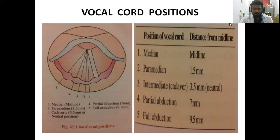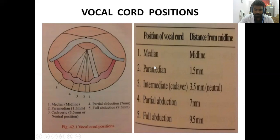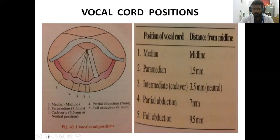These vocal cord positions are important because in different paralysis scenarios — such as unilateral or bilateral recurrent laryngeal nerve palsy or superior laryngeal nerve palsy — the vocal cord assumes a different position, so we need to know these positions first.